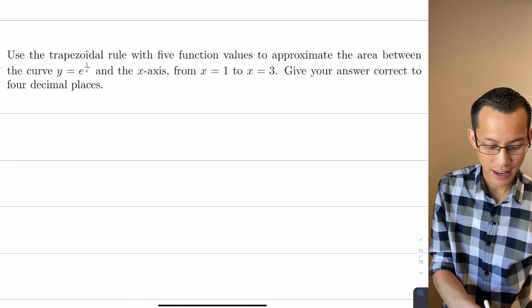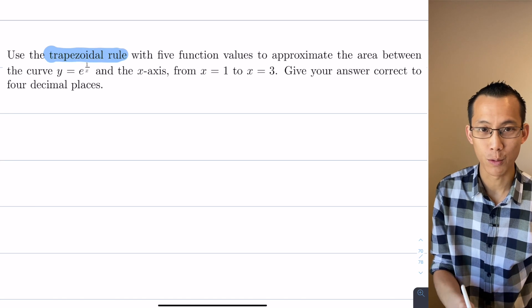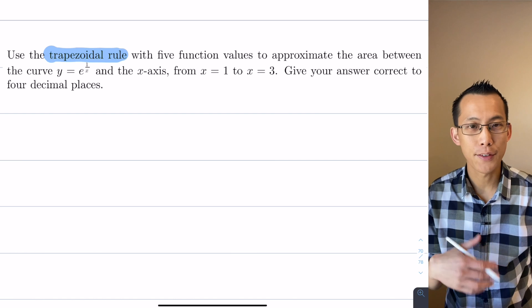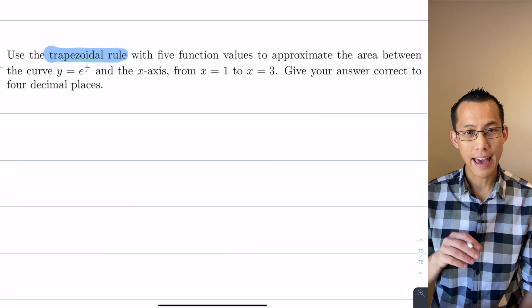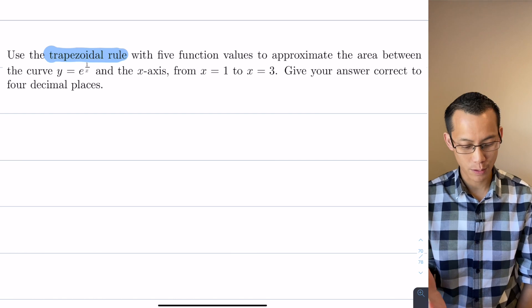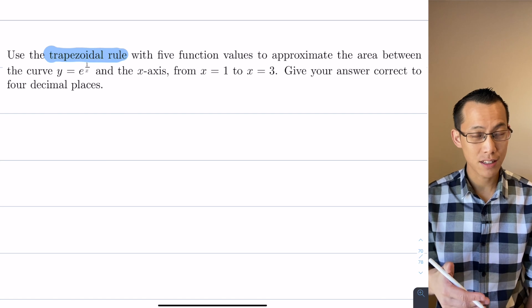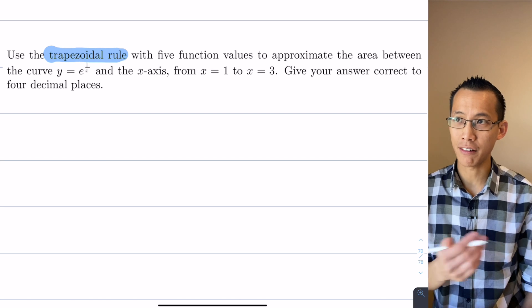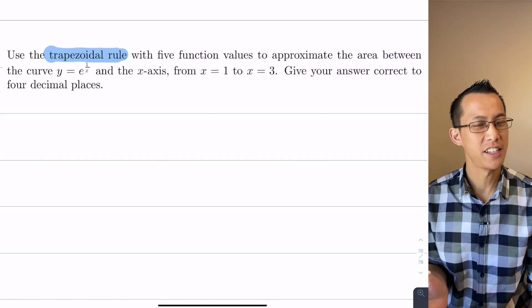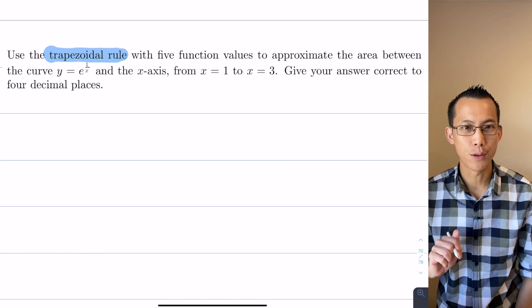The first thing is the question says use the trapezoidal rule. Now let's remember this is a method for trying to find an area close to an area when you can't actually integrate that thing directly, or when integrating directly is an excessive amount of work and we just need something close that'll be good enough.